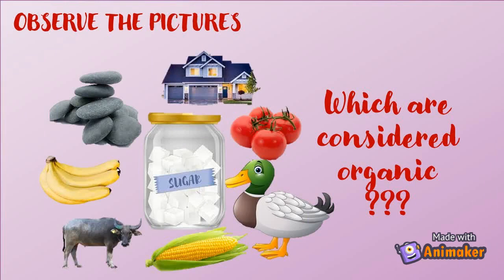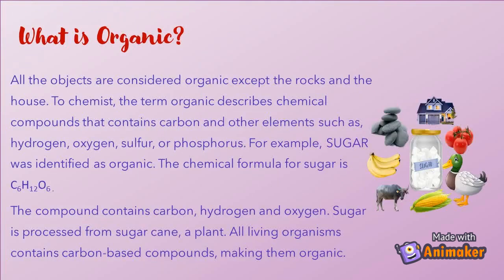Let us take a look at the pictures on your screen — which are considered organic and which are not? All the objects are considered organic except the rocks and the house. In chemistry, the term organic describes chemical compounds that contain carbon and other elements such as hydrogen, oxygen, nitrogen, sulfur, or phosphorus.